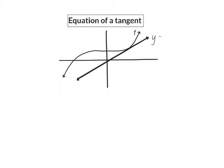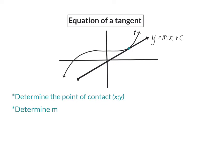The equation of a tangent is in the form of a straight line, y is equal to mx plus c, and to determine this equation, there are always three steps that you can follow. These three steps are not always necessarily in the same order. One step will be to determine the point of contact — the x and y coordinates where the tangent touches the graph. Next, you also need to determine the gradient, the m value, of that tangent, and we know that is the derivative of the function at that given point of contact. The third step is to calculate the c value, or the y-intercept, and that can be done by substituting the point of contact into the equation of the straight line.